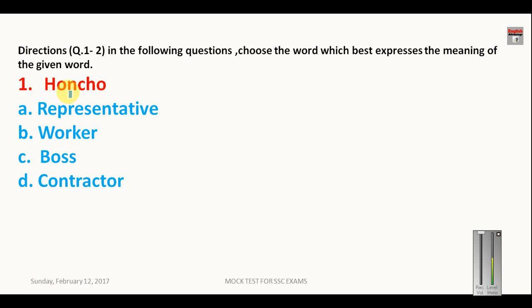Now let us get started with the real questions for multitasking exam. These kind of questions will definitely come in your multitasking exam or other SSC exams. This is the synonym part and you have to find the similar word given here in red color. Honcho, what is the meaning of honcho? Honcho means a boss or a leader or person in charge in any organization or company. So here your answer will be C, that is boss.